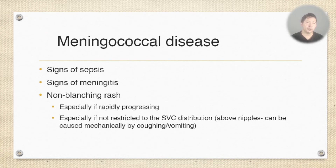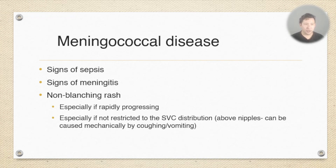The specific things to consider with meningococcal disease are signs of sepsis, but also signs of meningitis — do they have the classic photophobia, neck stiffness, and fever? Bear in mind that a lot of the time you don't get all three classic signs, so if they have any signs of meningism you've got to be worried. Then, do they have a non-blanching rash? That's another big cause of concern, particularly if it's rapidly progressing.